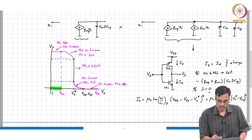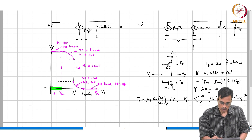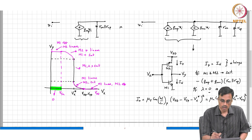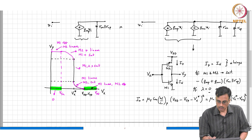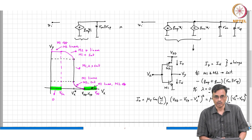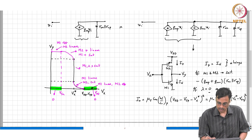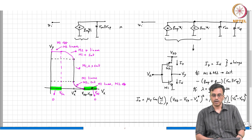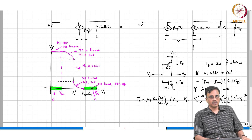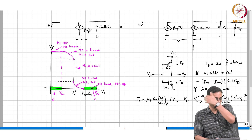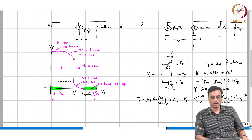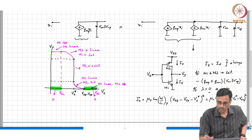The static power in the extreme regions is zero. That is why this circuit is so important — in the static state there is no power dissipation. This is an inverter; this is the CMOS inverter.